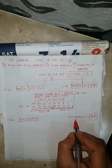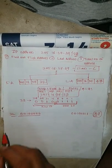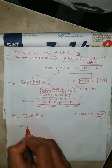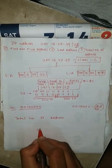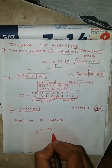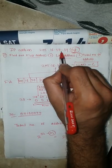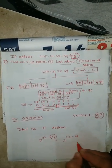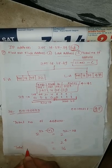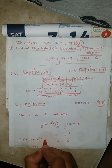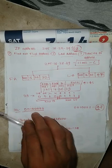To find the total number of addresses, the formula is 2 raised to the power of (32 minus n), where n is the subnet mask. So 2 raised to (32 - 28) = 2 raised to 4 = 16. The total number of addresses is 16.